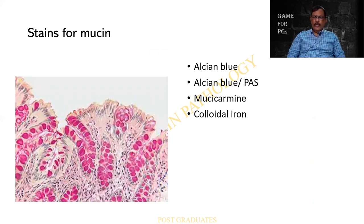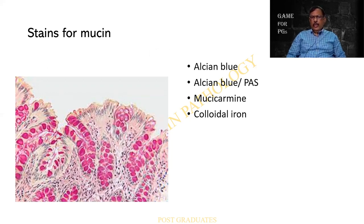What are the stains for Mucin? Look at this mucus — I am finding beautiful basket-like goblet cells which have taken up a special color. The stains can include Alcian blue, a beautiful alternative or supplement for the PAS stain. It can come in different pH: pH of 1, 2.5, or 3.